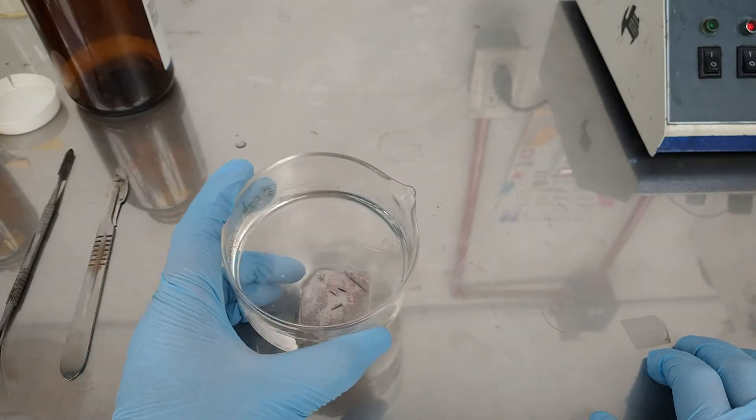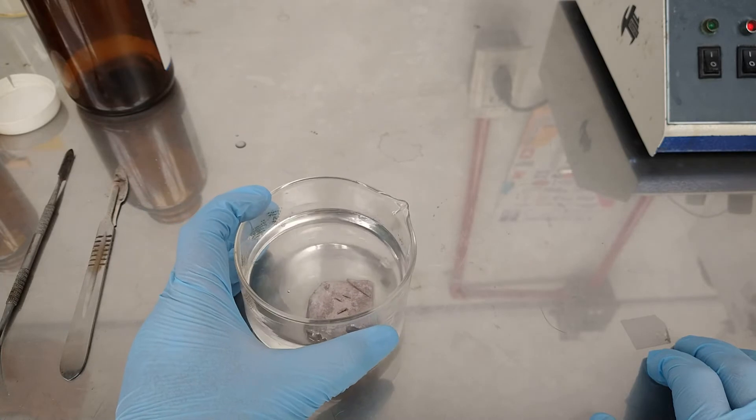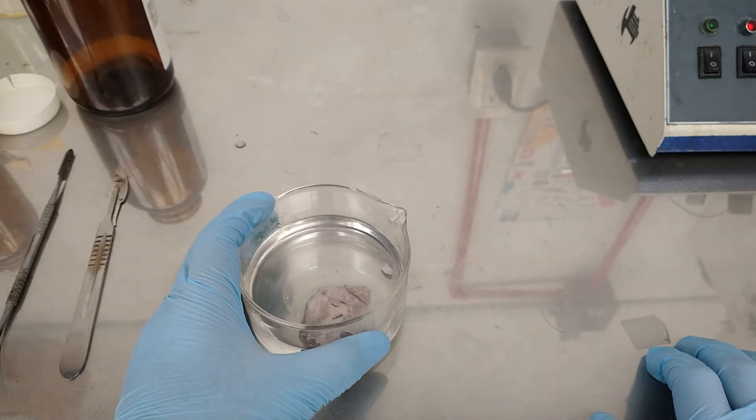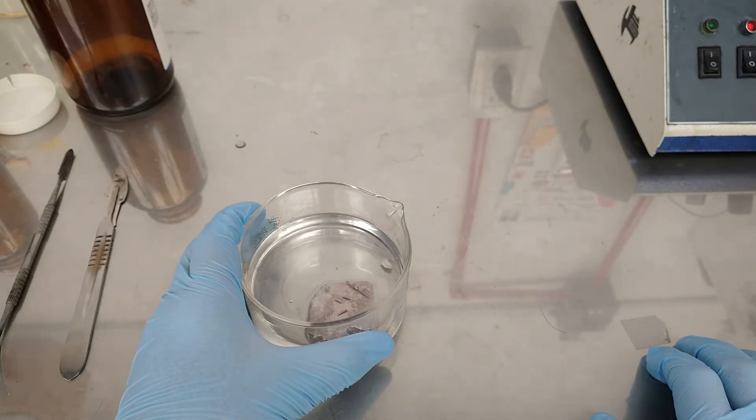Today we are going to make some ethyl acetoacetate via the Claisen condensation. Claisen condensation involves the reaction between two molecules of ethyl acetate and two molecules of sodium ethoxide to give our desired product.